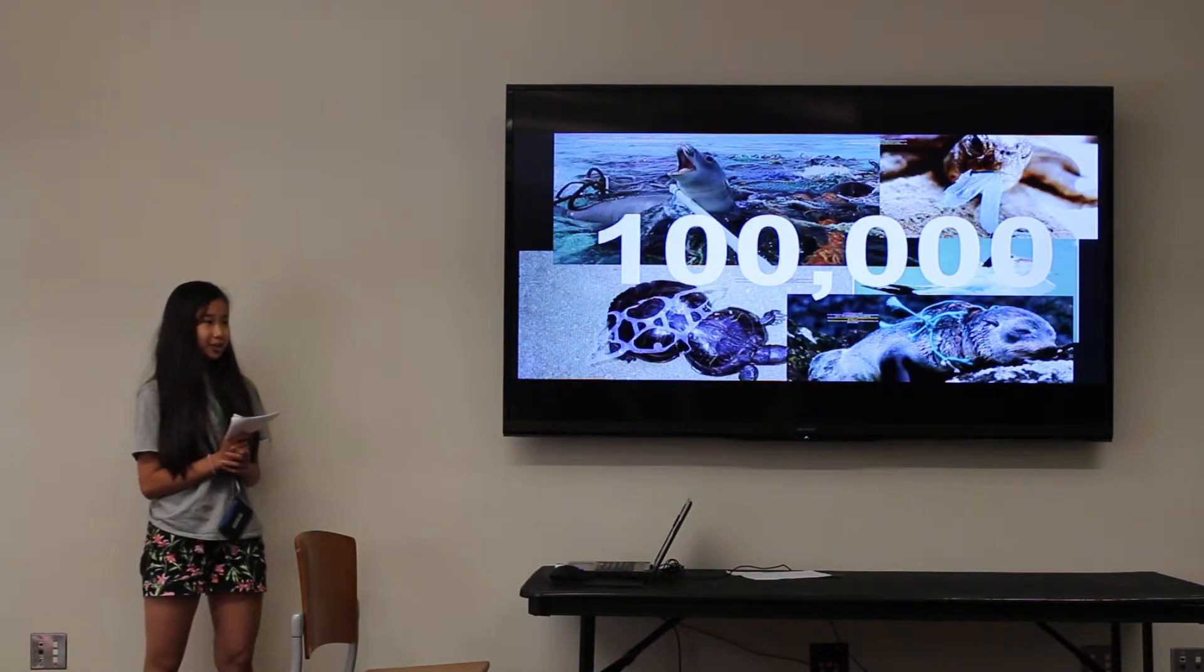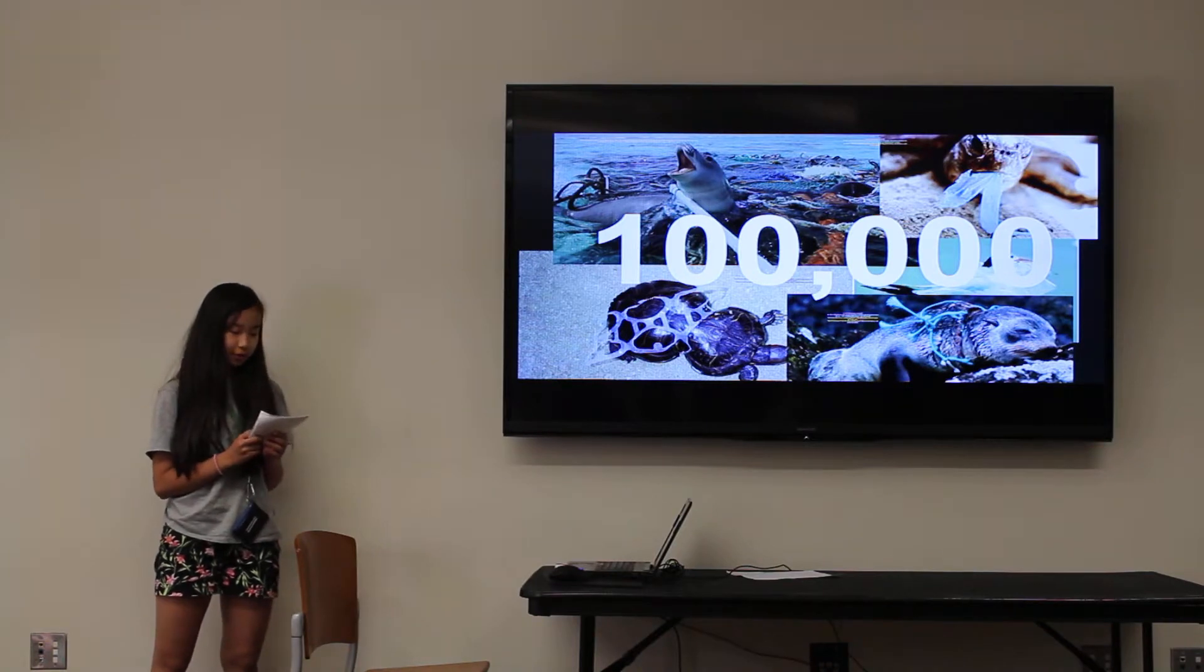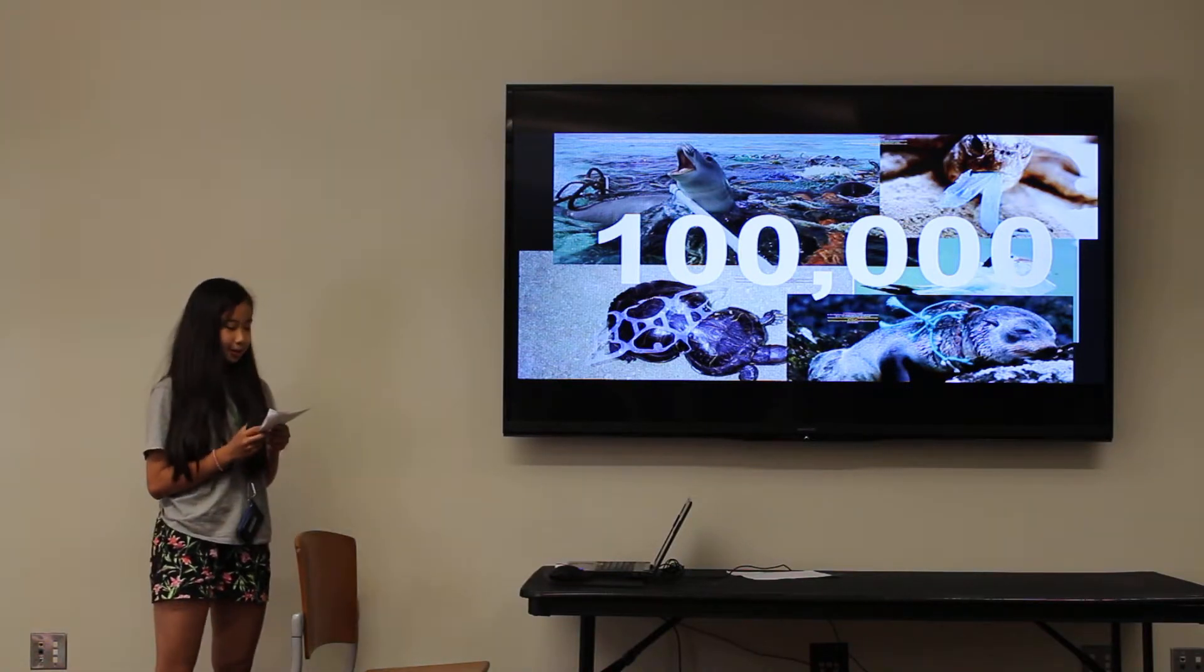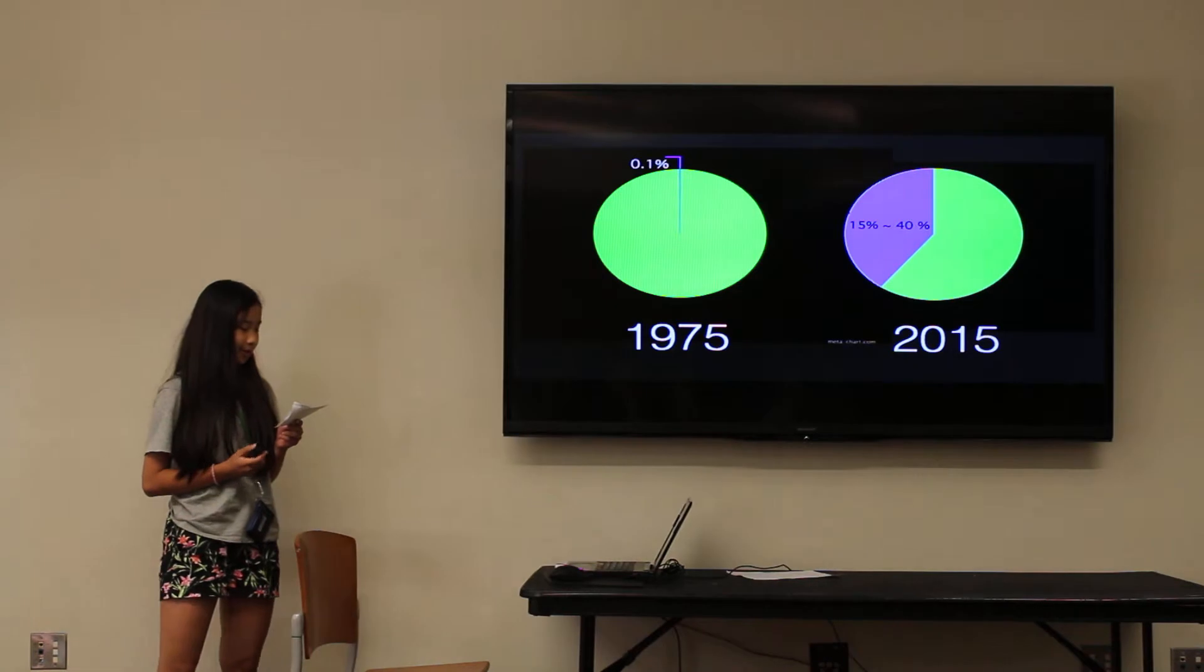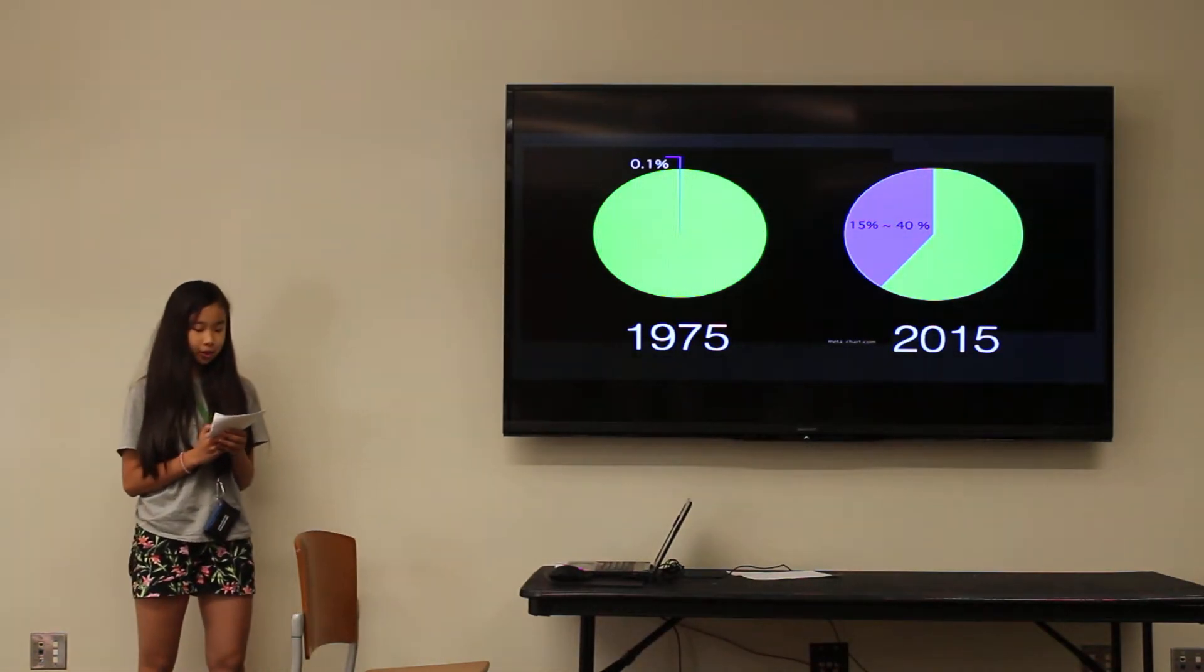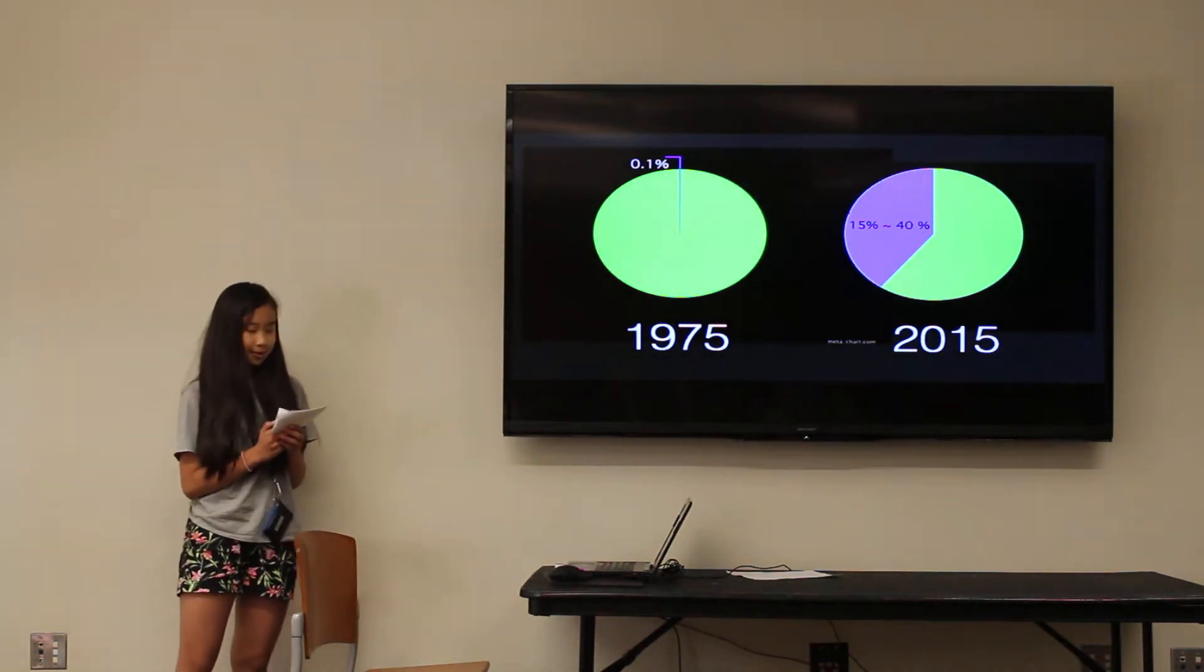At least 100,000 marine creatures die every year because of our plastic pollution. When you throw something into the trash bin, you think that it's being recycled. But out of 300 million tons of plastic produced each year, only 10% is recycled.